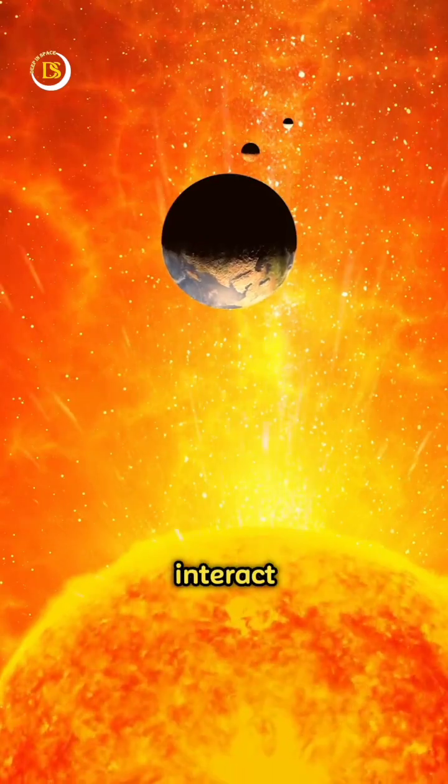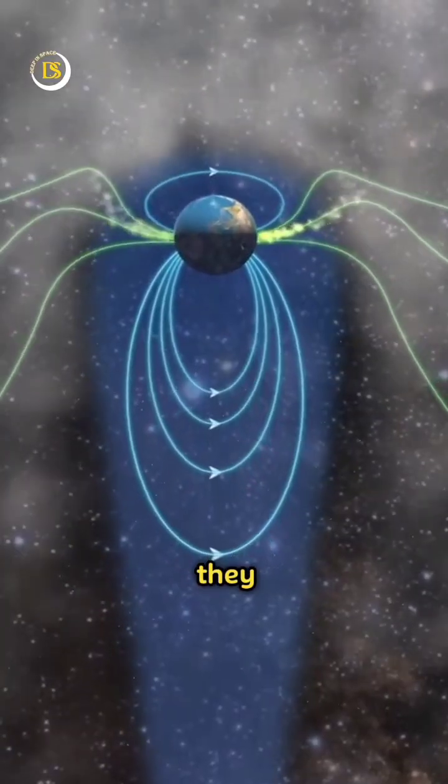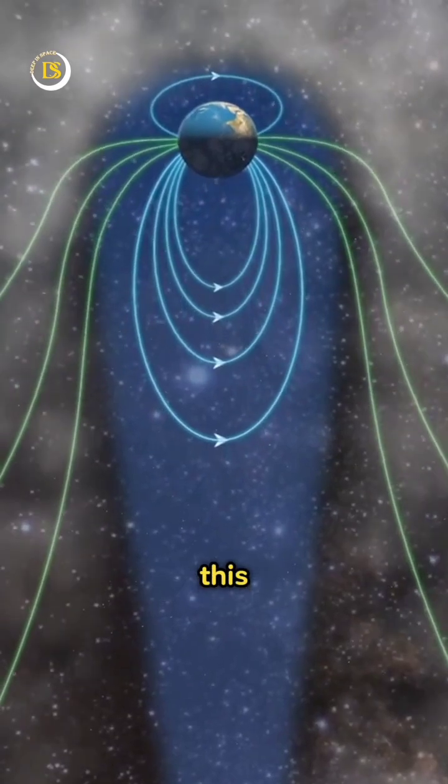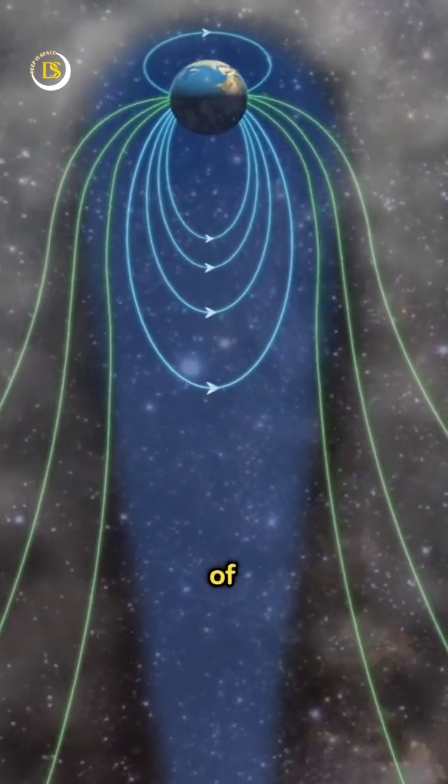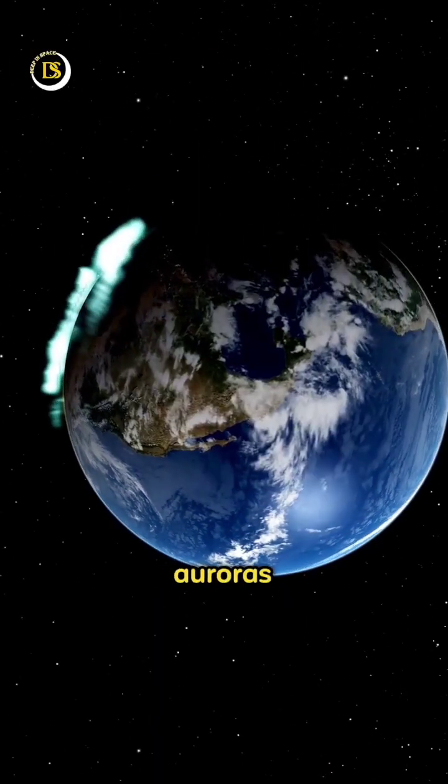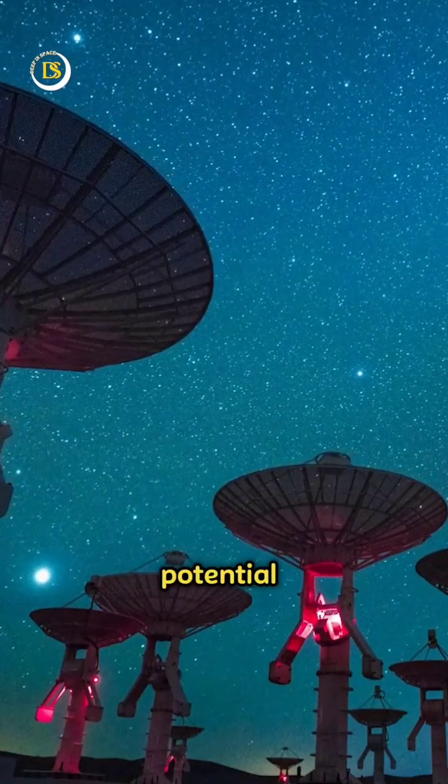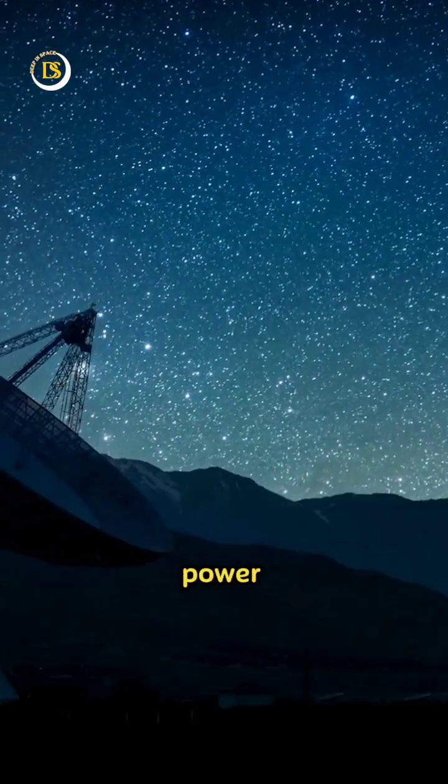When these charged particles interact with Earth's magnetic field, they can cause fluctuations and disturbances in the magnetosphere. This interaction can lead to a variety of effects, including beautiful auroras in the polar regions, disruptions in radio communications, and potential damage to satellites and power grids.